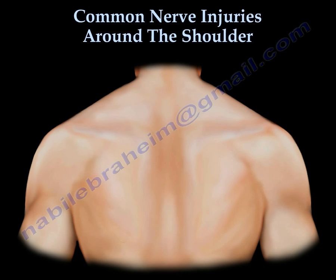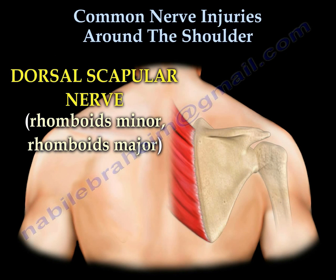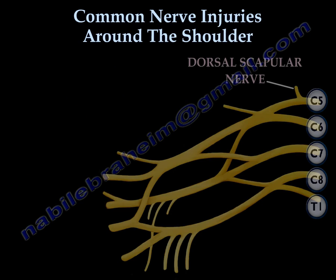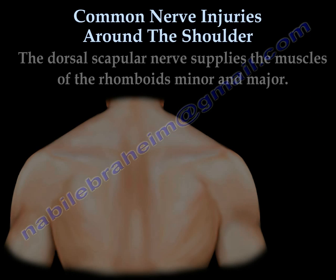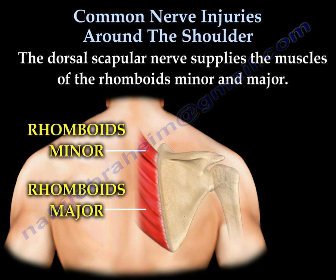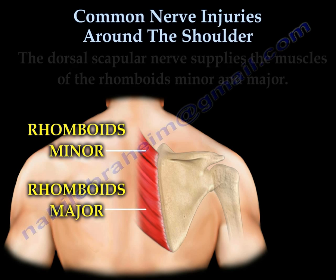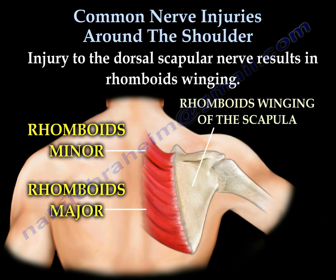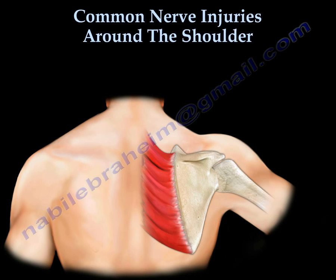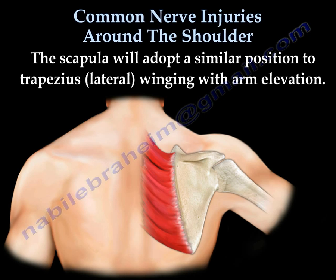Dorsal scapular nerve — rhomboids minor and major. The nerve arises from the C5 nerve root and supplies the rhomboids minor and major. Injury to the nerve causes rhomboid winging, which is similar to winging of the trapezius with arm elevation.